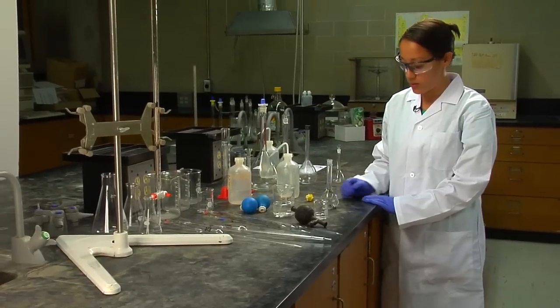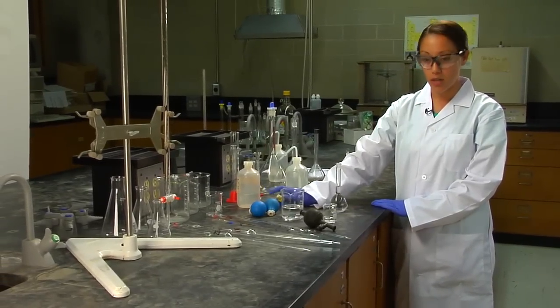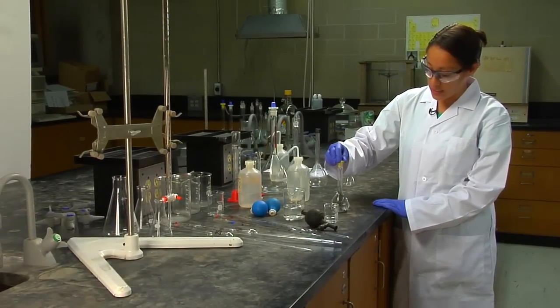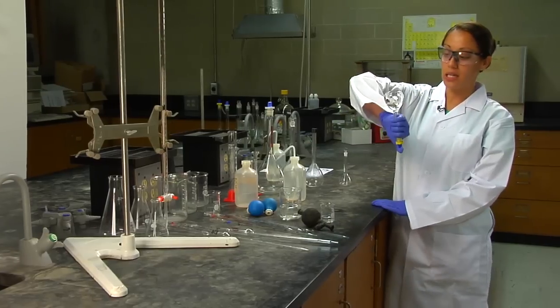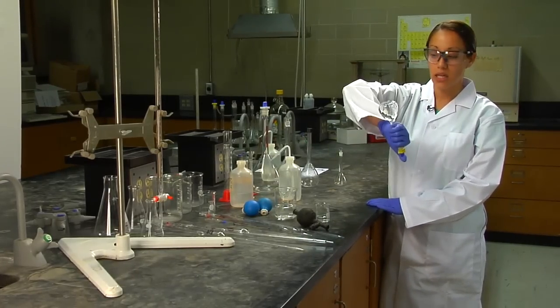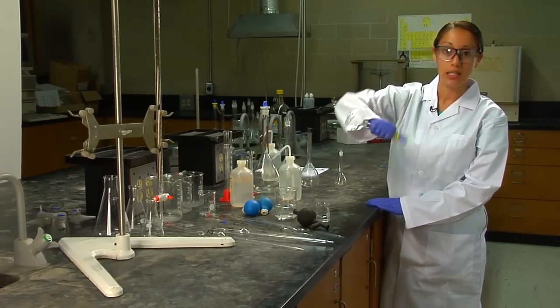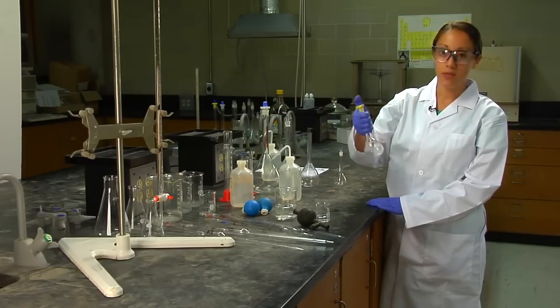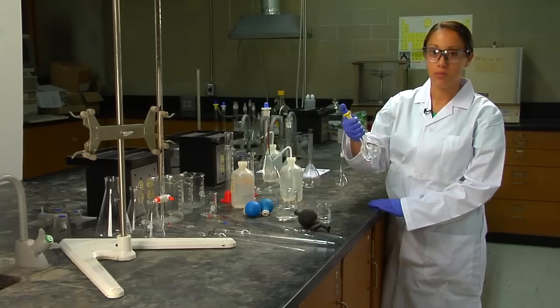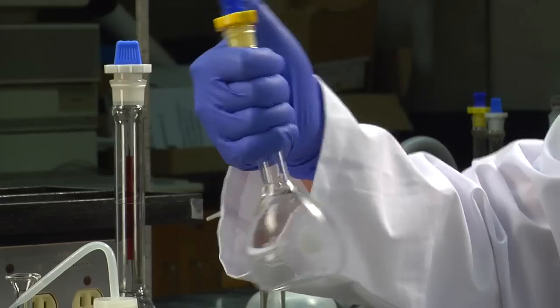You've successfully diluted your 100 ppm stock to 2 ppm. The last part of this is to invert it at least 10 to 20 times to ensure complete mixing, and then you've successfully prepared a 2 ppm standard solution for your experiments.